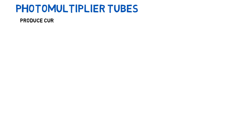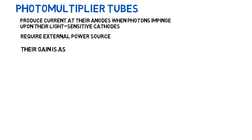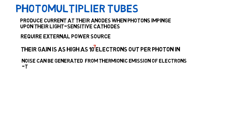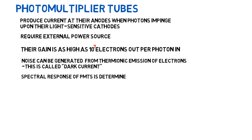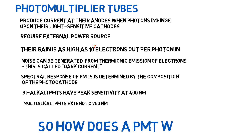Let's discuss photomultiplier tubes. PMTs produce current at their anodes when photons impinge upon their light-sensitive cathodes. They require an external power source. Their gain is as high as 10 to the 7 photoelectrons out per photon in. Noise can be generated from thermionic emission of electrons — what we call dark current. The spectral response of PMTs is determined by the composition of the photocathode. If it's bialkali, the PMT has a peak sensitivity around 400 nanometers; if it's multialkali, it extends to about 750 nanometers.